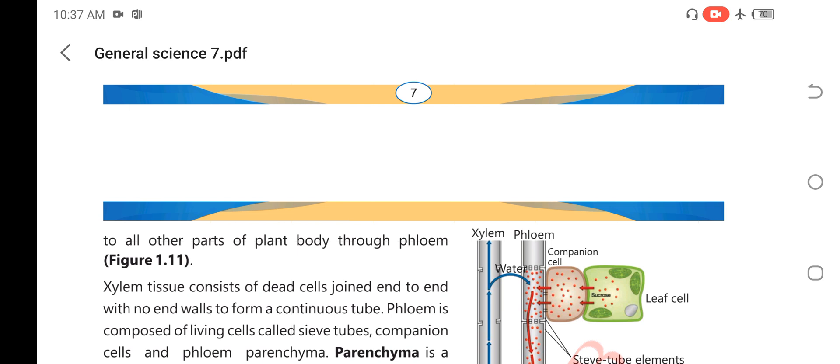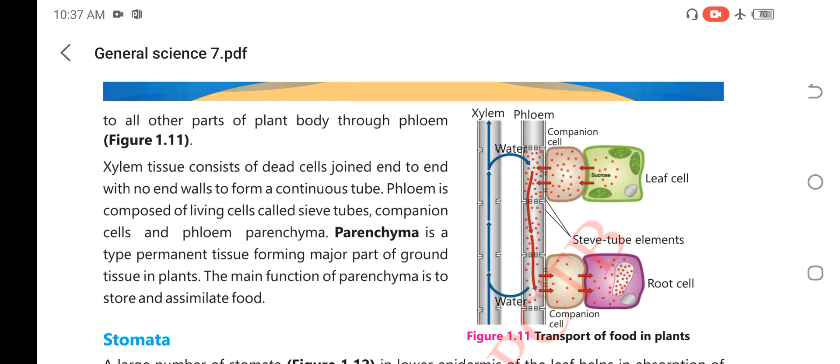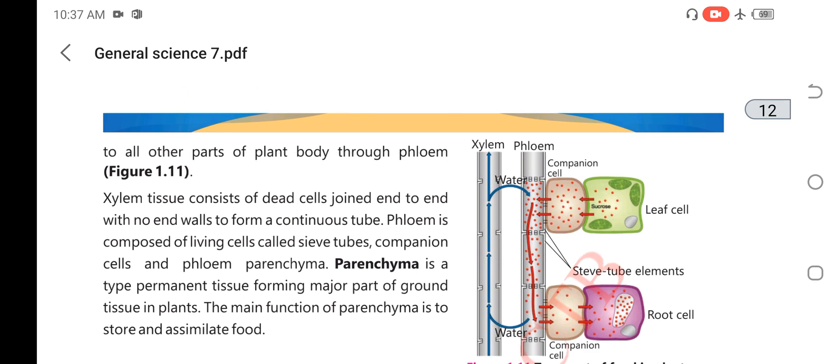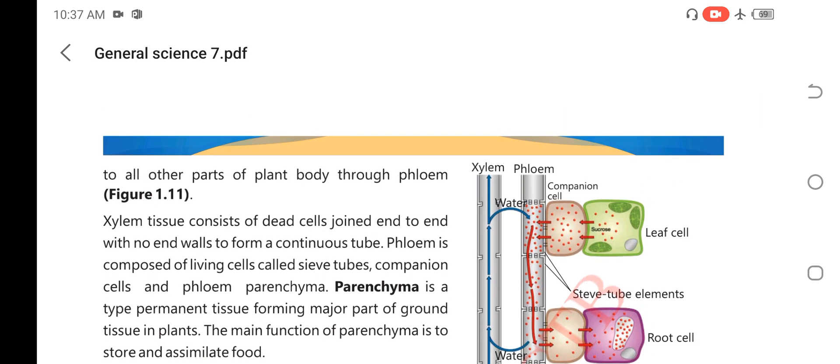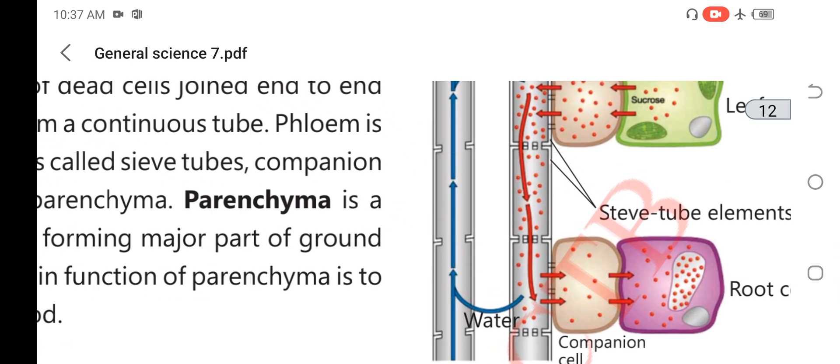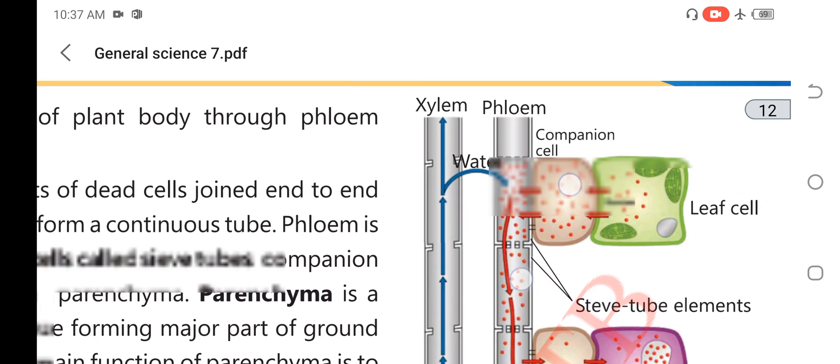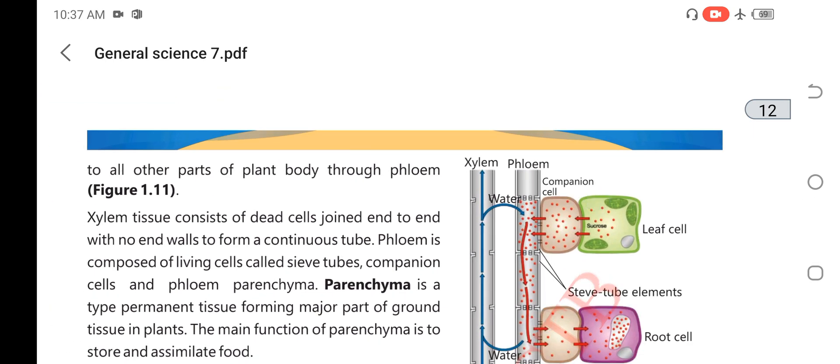First of all, food that is prepared by the leaf during the process of photosynthesis enters into the sieve tube elements in dissolved form through companion cells. Then it is transported to the phloem, and this phloem tissue transports material to all parts of the body, transporting material up and down the plant body.